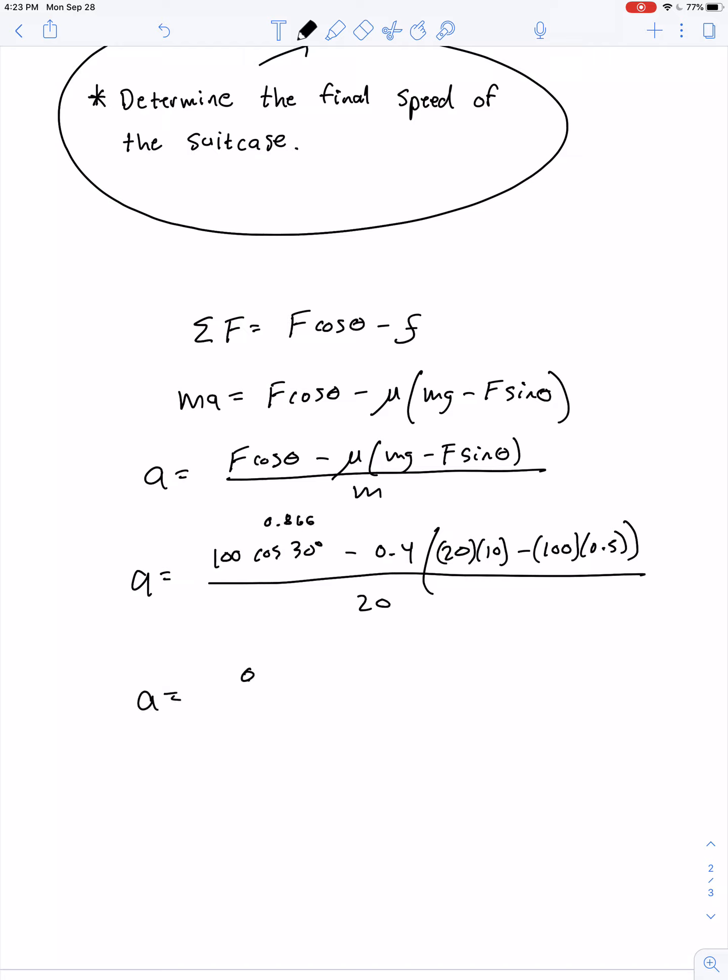So we have A equals 86.6 minus, that's 200, that's 50, so that's 150. So that's 60. So 86.6 minus 60, all divided by 20, or 26.6 over 20, or 2.66 over 2, or 1.33. And we're assuming the units are meters per second squared, although I skipped plugging units into my work.